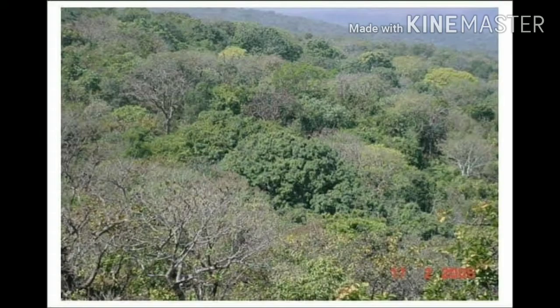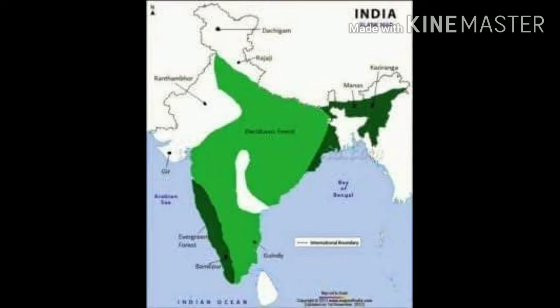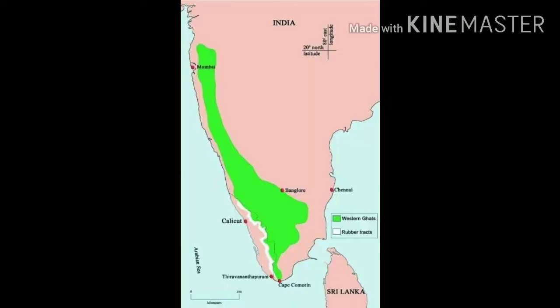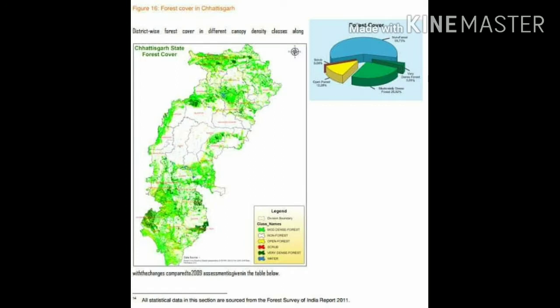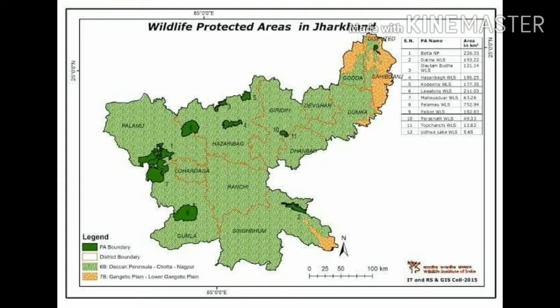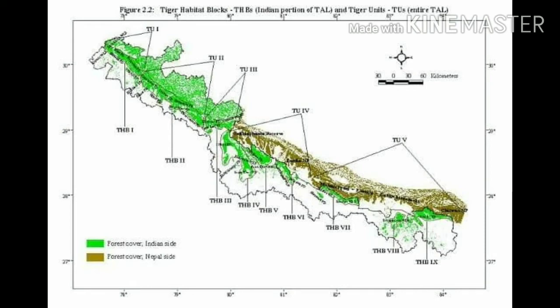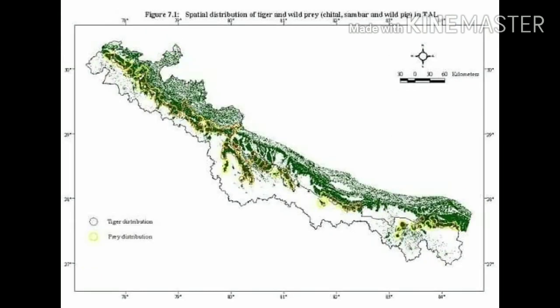The moist deciduous forests are located in areas that receive rainfall of 200 cm to 100 cm. The main locations of these forests are the eastern slope of the Western Ghats, West Odisha, Chhattisgarh, Jharkhand, the Northeastern states, and the Himalayan foothills.